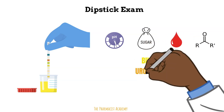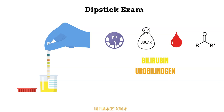Bilirubin and urobilinogen go together. Bilirubin is made during the normal process of breaking down red blood cells — it is a yellowish substance found in bile, a fluid made by your liver to help with digestion. When bilirubin from the bile reaches the gut it gets broken down into urobilinogen; some of it is absorbed back into the blood and excreted in the urine, but the majority is excreted in the stool. Because of this, you may see urobilinogen in normal urine — this is actually what gives urine its yellow color — but you shouldn't have any bilirubin in your urine. Any amount of bilirubin or elevated urobilinogen should prompt you to assess the liver or assess for hemolysis of red blood cells.